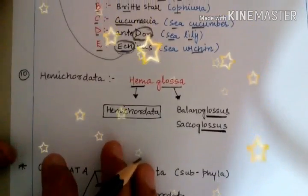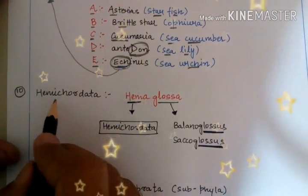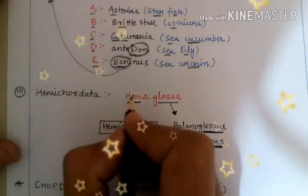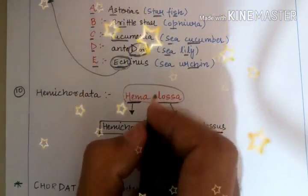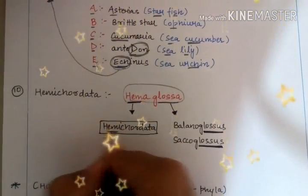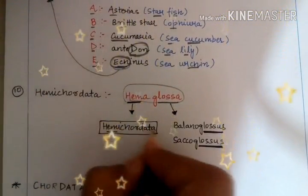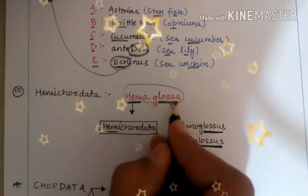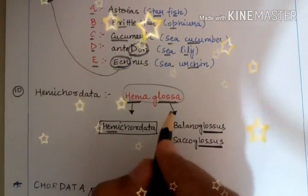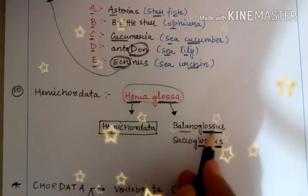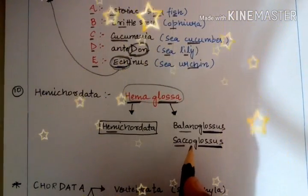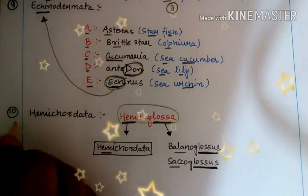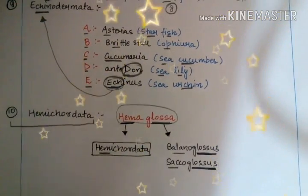The next phylum is Hemichordata. In phylum Hemichordata you have to memorize just a single word: 'Hemaglossa.' Hema means Hemichordata since we are learning about Hemichordata, and glossa refers to two organisms having 'glossa' in their name — Balanoglossus and Saccoglossus.